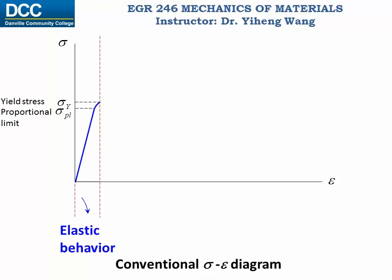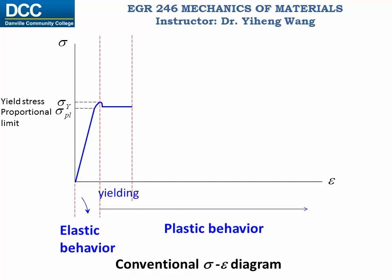Before the yield point, the material is going through elastic behavior. If we unload the specimen from the machine, it is able to restore the elongation and return to its original length and shape. But after the yield point, the material enters plastic behavior, which means that any deformation after this point is not fully restored — the deformation is permanent. During yielding, there might be a small decrease in stress and a period where the material deforms without any increase in stress.